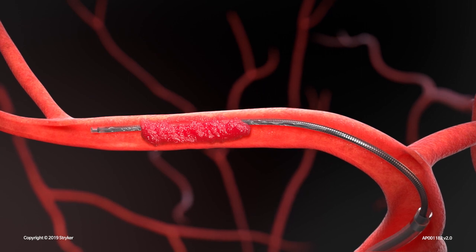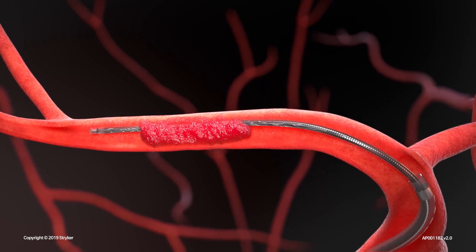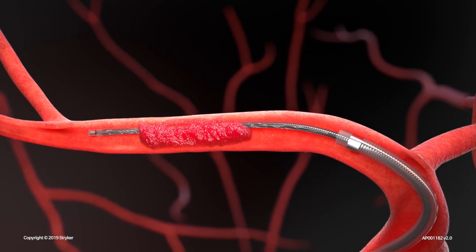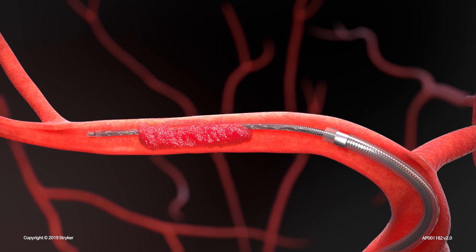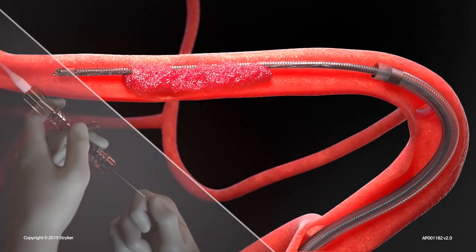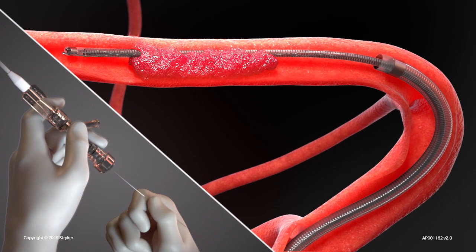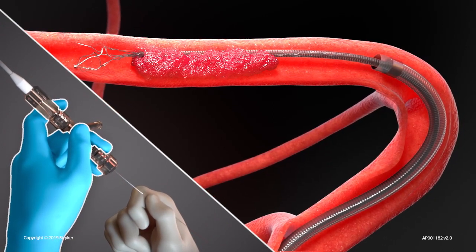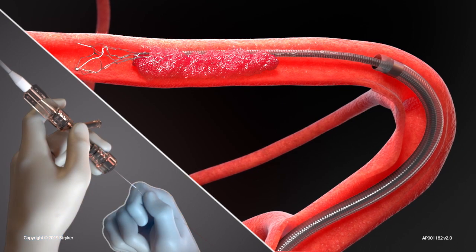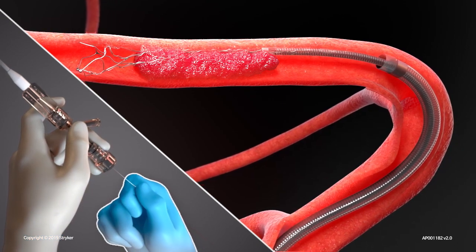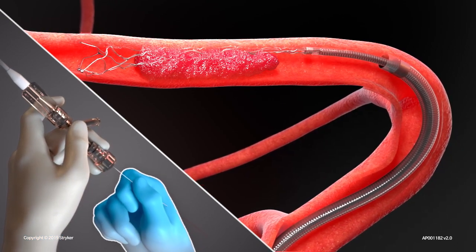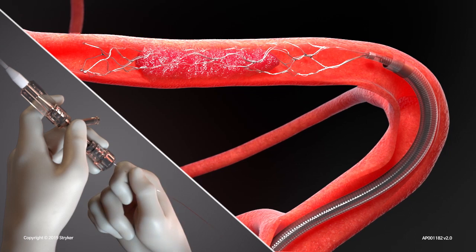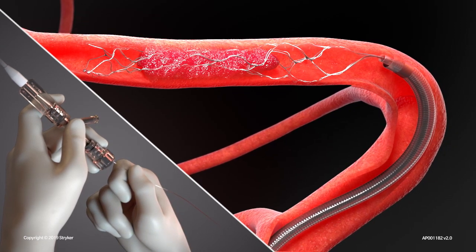A catalyst distal access catheter may be advanced over the microcatheter and positioned just proximal to the clot. Unsheath the distal tip of the retriever. Gentle forward pressure is then applied to the wire while keeping the microcatheter stable until the retriever's clot capture zone is optimally positioned in the clot. This forward pressure enhances stent expansion to improve clot integration.